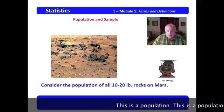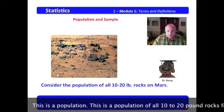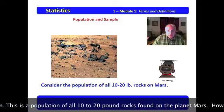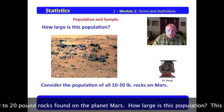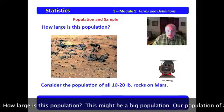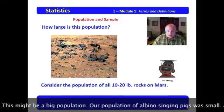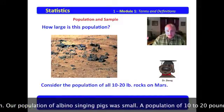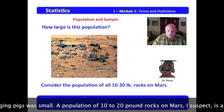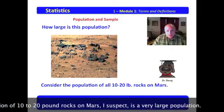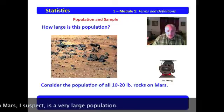This is a population. This is a population of all 10 to 20 pound rocks found on the planet Mars. Now how large is this population? This might be a big population. Our population of albino singing pigs was small. A population of 10 to 20 pound rocks on Mars, I suspect, is a very large population.